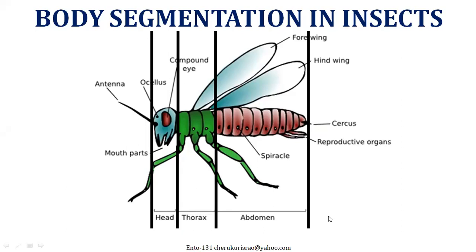The abdomen has more segments, and this region is a kind of metabolic region in which the insect's digestive system, excretory system, nervous system, reproductive system, and respiratory system are all placed. Though some parts of these systems are also found in the thorax, the majority of all these metabolic systems are available in the abdomen — that is the reason it is called the metabolic region.